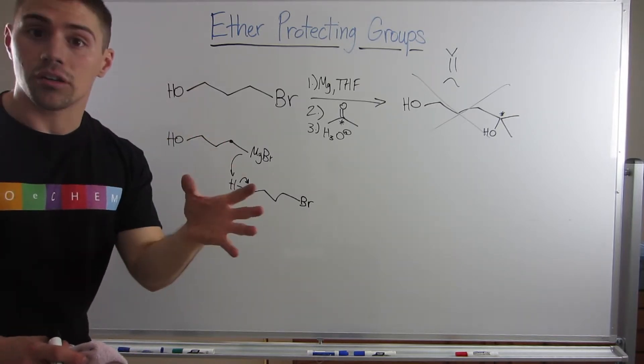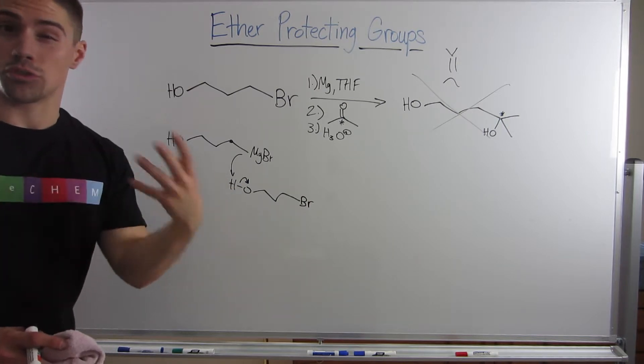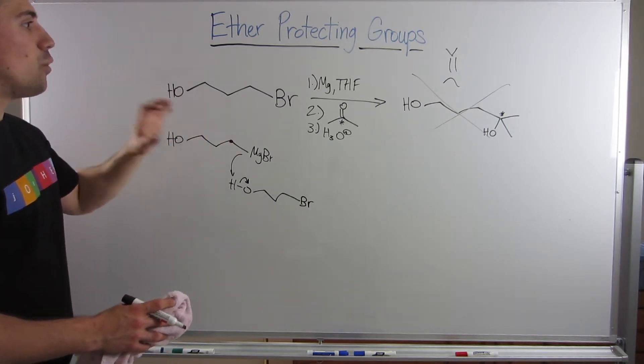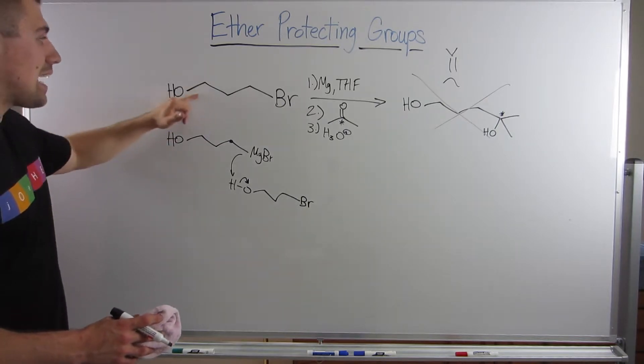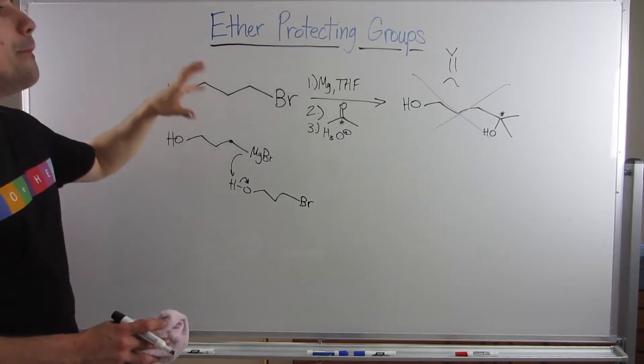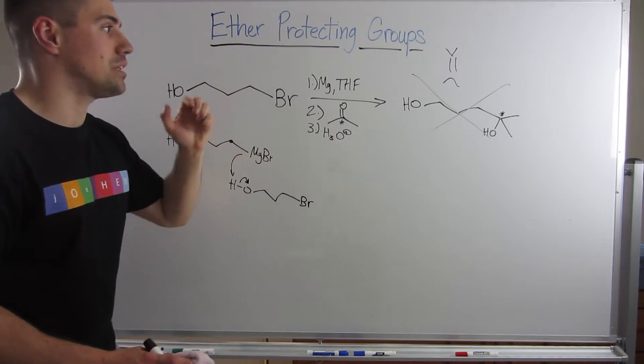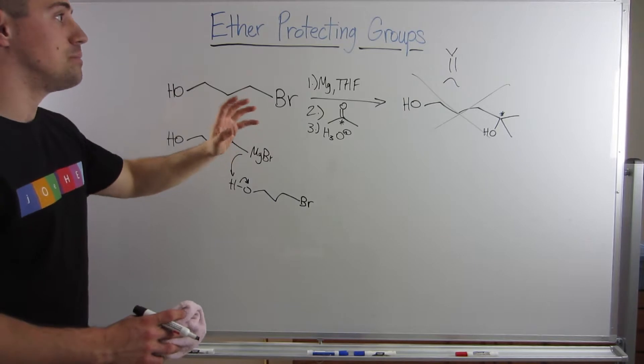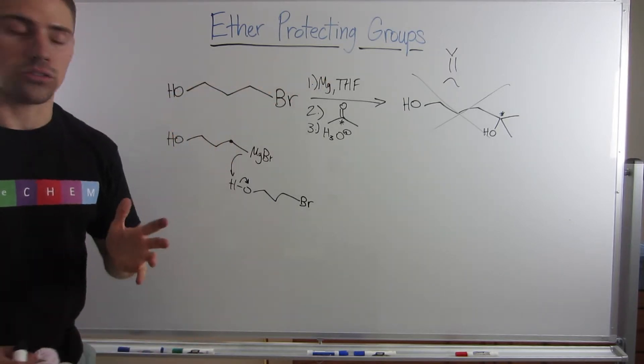I may have mentioned it before—remember, Grignards can't be in the presence of water, anything protic. Otherwise, you spoil your Grignard. So this is what I mean by: if only there was some way we could protect this or disguise this, make a Grignard, attack the carbonyl, and then take that disguising piece away, we could complete our reaction by protecting part of our molecule.